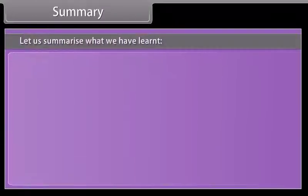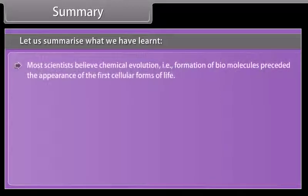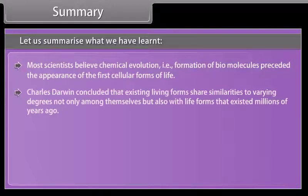Summary. Let us summarize what we have learned. Most scientists believe chemical evolution, that is formation of biomolecules, preceded the appearance of the first cellular forms of life. Charles Darwin concluded that existing living forms share similarities to varying degrees not only among themselves but also with life forms that existed millions of years ago.